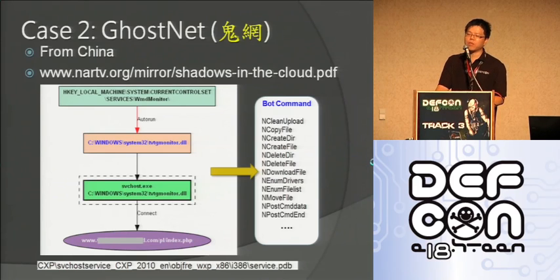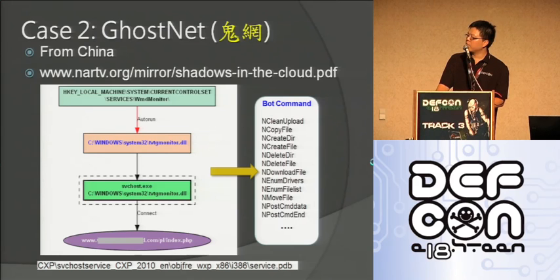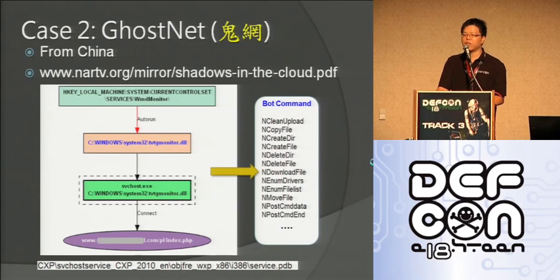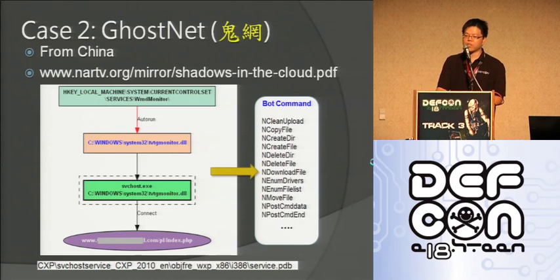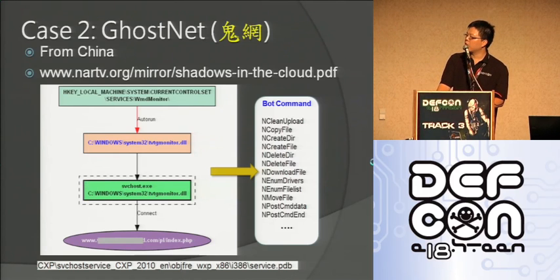Case number two is also a very famous one in the Chinese hacker community — it's called GhostNet. The original official report was actually released by Canadian researchers in 'Shadows in the Cloud.' From the example, you can see that it tried to install itself as a system DLL file. It will then connect to a CNC server. When we reversed the binary, we also identified the botnet commands that it can use.